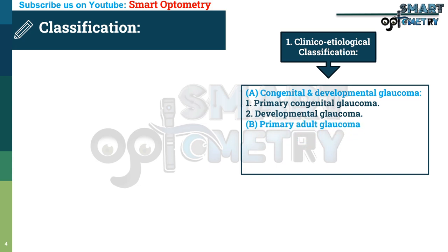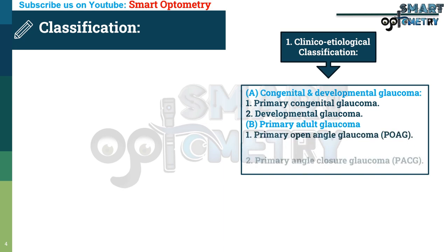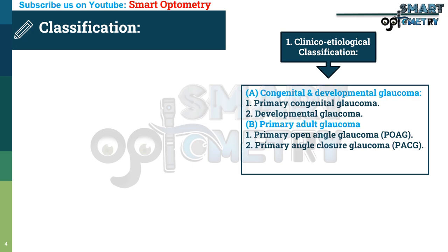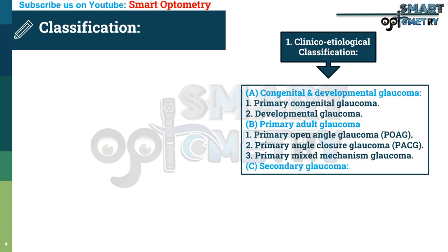B. Primary adult glaucoma — this may be 1. Primary open angle glaucoma or POAG, 2. Primary angle closure glaucoma or PACG, and 3. Primary mixed mechanism glaucoma. C. Secondary glaucoma.